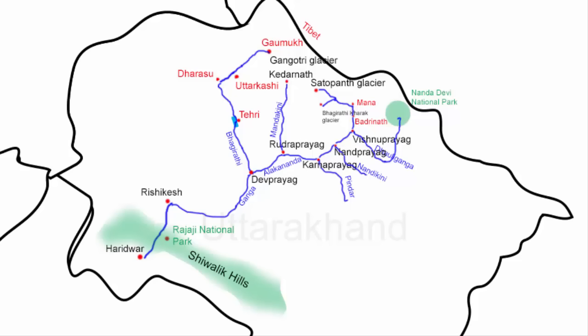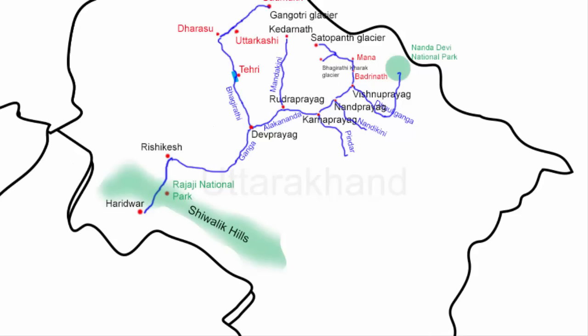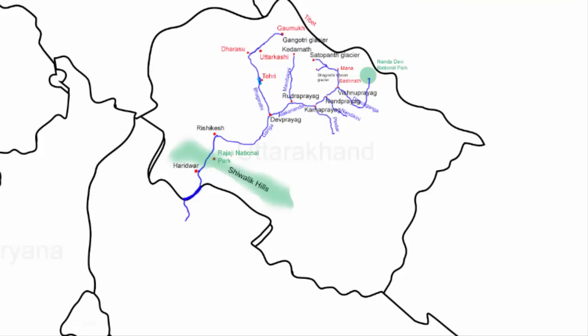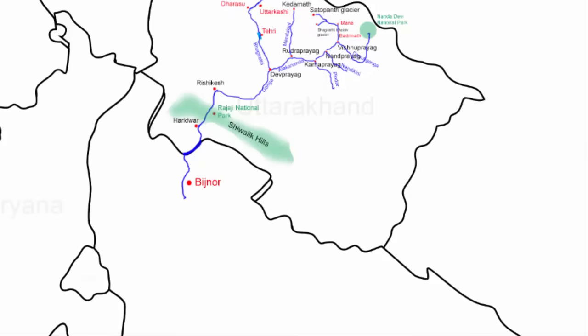After reaching Haridwar, river Ganga flows towards the south. In about 20 to 25 kilometers the river reaches the Uttarakhand and Uttar Pradesh border, then continues along that border for about 20 kilometers before fully entering Uttar Pradesh. It enters from the district of Bijnor and continues to flow south for about 150 kilometers, then starts turning southeast.